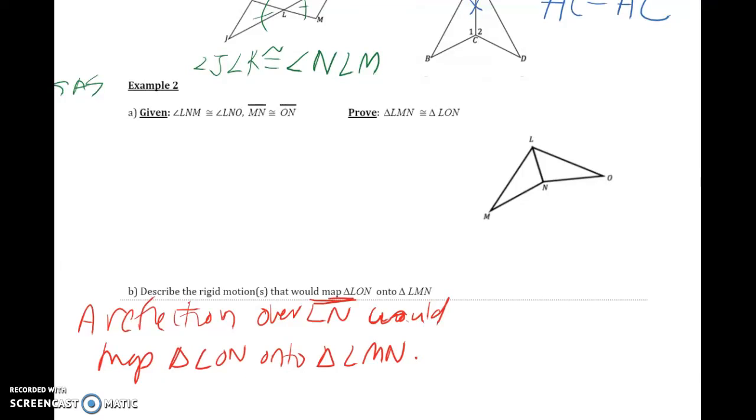Unit 4, lesson 2, example 2. This video will focus on using the flow proof method for proving these two triangles congruent. Again, the process of annotating the diagram will stay the same.